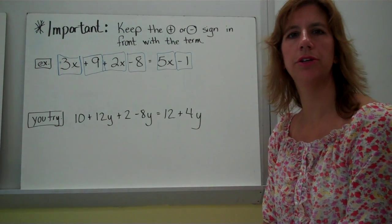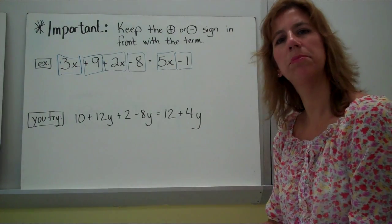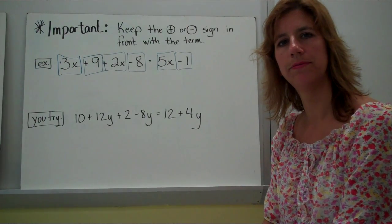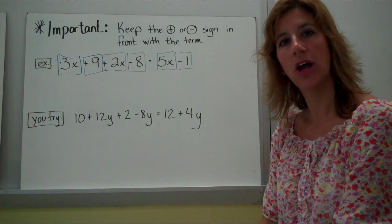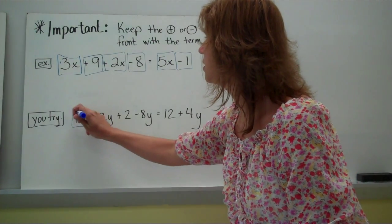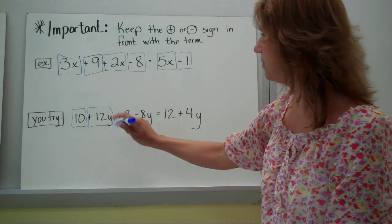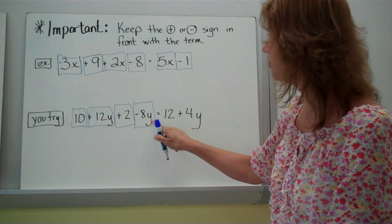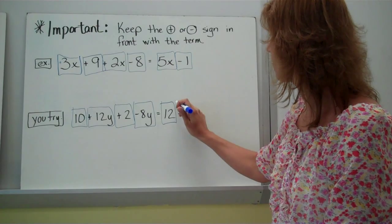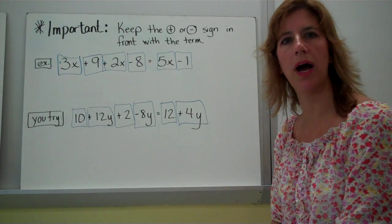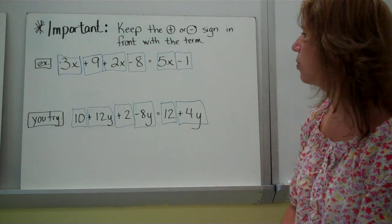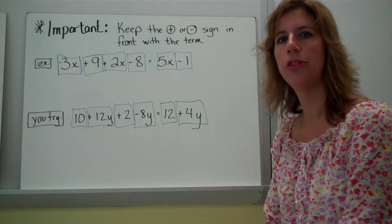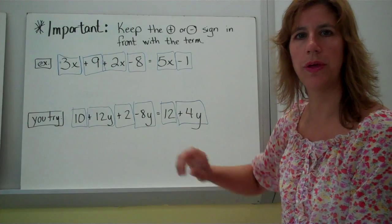Go ahead and jot this one down and see if you can do it on your own — put a box around or color it, or put shapes, and section off each term with its correct symbol. Hopefully you've got positive 12, positive 2, negative 8y. Notice I'm keeping the y with the 8. The complete term is positive 4y — not just the 4, but 4y. This is going to become really important for the next examples where we're actually going to put together those like terms. The symbol in front goes with the term.